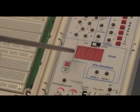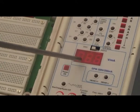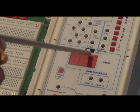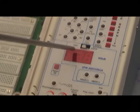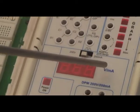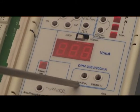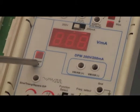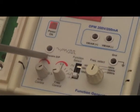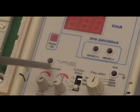This is DPM, 2.5 digit. Left side 200 volt range, right side 200 milliamp range. This is positive and this is negative. This is power on LED. This is function generator output.